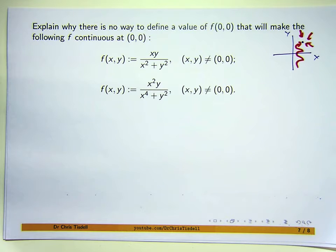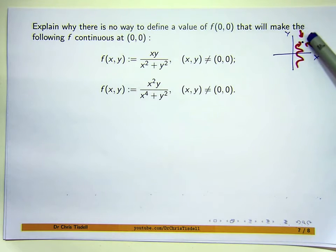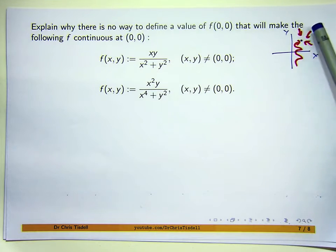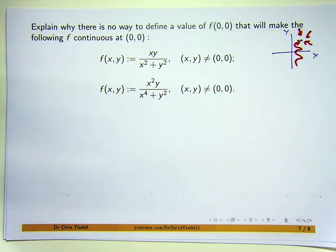With these kinds of problems, it's much easier to show that a limit doesn't exist than to show that it does exist. All you've got to do is show that there's one path or one curve going towards the point in question where the function's limit doesn't match another curve or another path leading to that point. A limit exists for functions of two variables if and only if the limit is the same along all paths to that point. So if you can find two paths where the two limits are not the same, it means the limit doesn't exist.